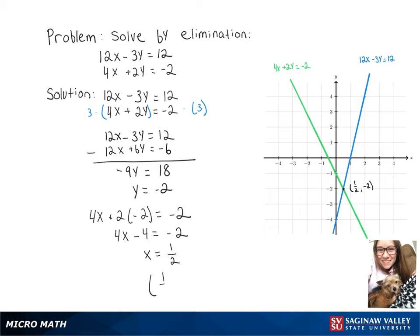So our solution here is 1 half, negative 2. And if we look at our two lines on our graph, that's the point where they intersect.